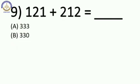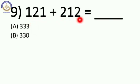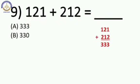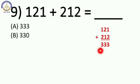Now next: 121 plus 212 is equal to blank. So do the addition. Our answer is 333. This is option number A.